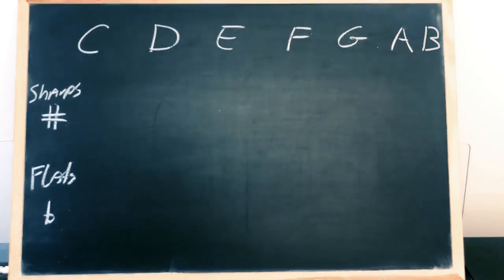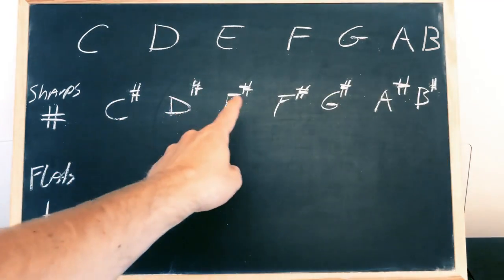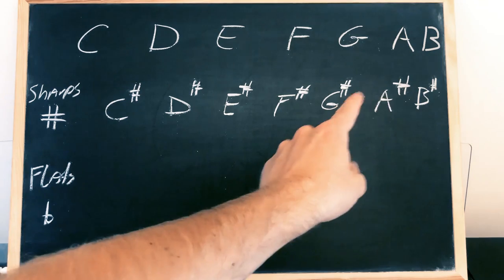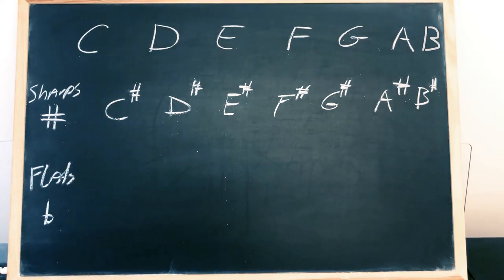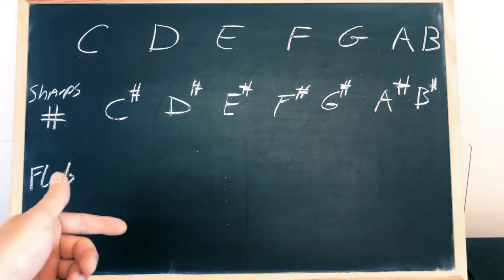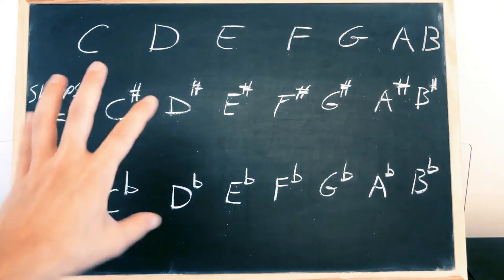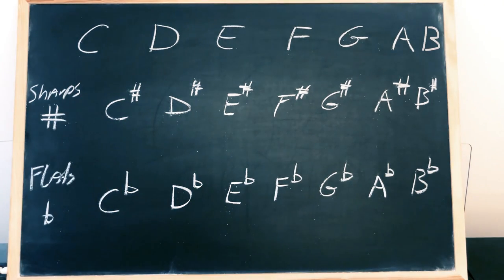So let's write that down. C sharp, D sharp, E sharp, F sharp, G sharp, A sharp, and B sharp. We can do the same for flats: C flat, etc. And these are all of the 21 note names.